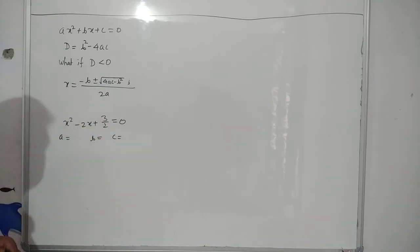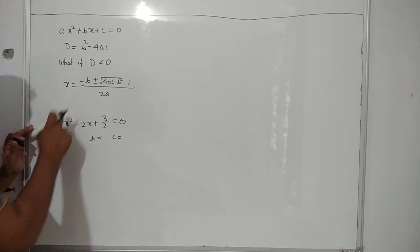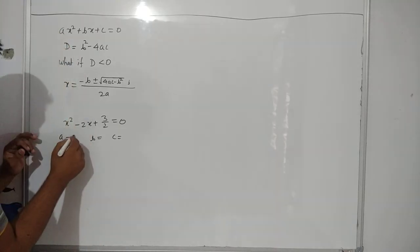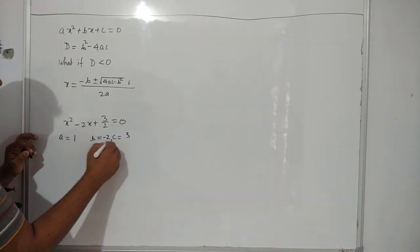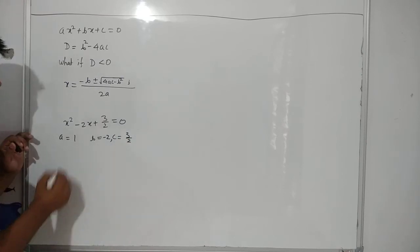x square minus 2x plus 3 by 2 equals to 0. You can compare this with this standard form. a equals to 1, b equals to minus 2 and c equals to 3 by 2.